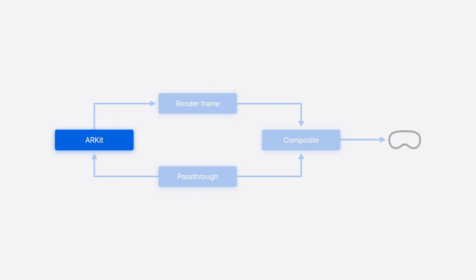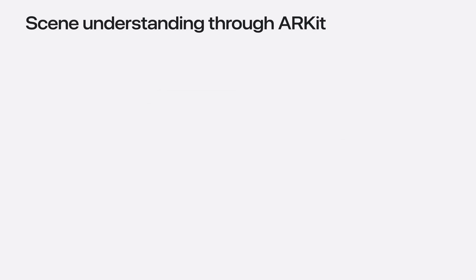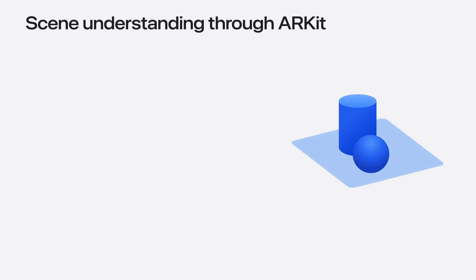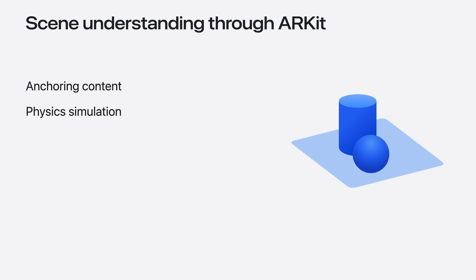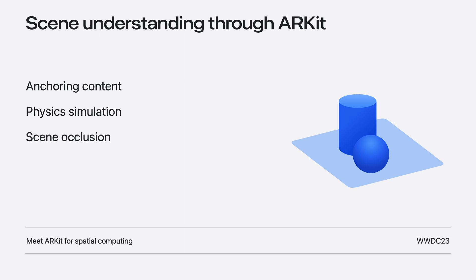Next, you will use data provided by ARKit to incorporate scene understanding with your rendered content. In mixed immersion style, rendered content is visible alongside the user's physical surroundings. So to ensure a more realistic experience, you will integrate scene understanding into your app's rendering logic. With ARKit, you can anchor your rendered content to objects and surfaces in the real world, perform physics simulations for realistic interactions between your rendered content and physical objects, or occlude any rendered content that appears behind a physical object. To learn more about ARKit on VisionOS, check out Meet ARKit for Spatial Computing.